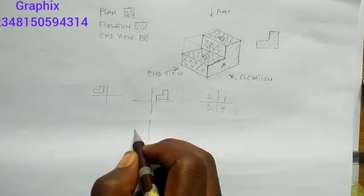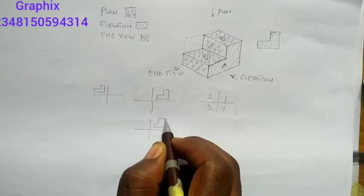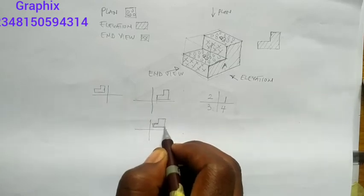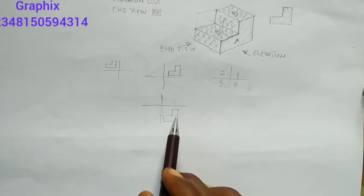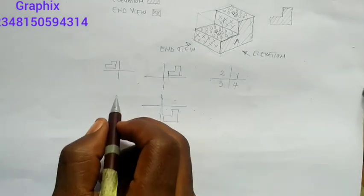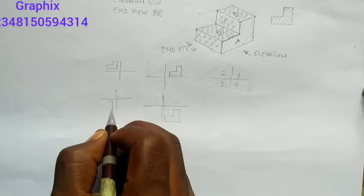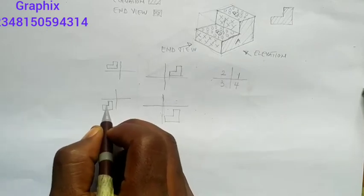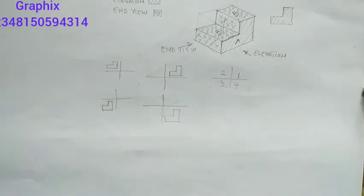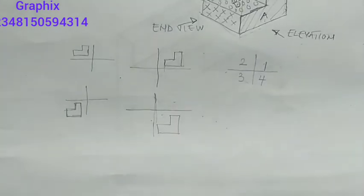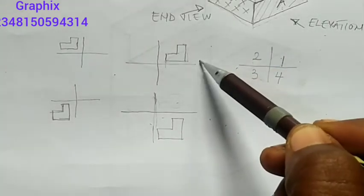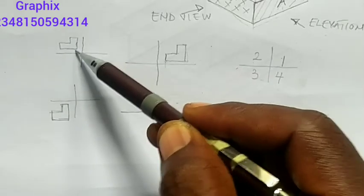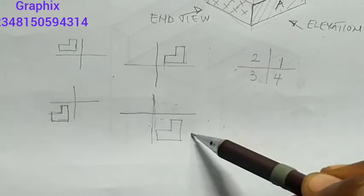If I have my elevation in the third quadrant, I'll say it is third angle projection. If I have it in the fourth quadrant, I'll say it is fourth angle projection. So: first quadrant — first angle projection; second quadrant — second angle projection; third quadrant — third angle projection; fourth quadrant — fourth angle projection.